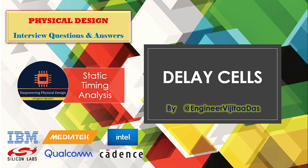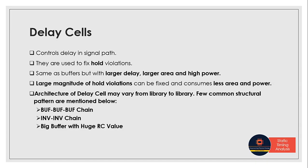Delay cells are used to control delays in a signal path. These delay cells are used to fix hold violations in the design. We start fixing hold violations from CTS stage onwards, so these delay cells are required when high hold violations, high number of hold violations are there in the design.